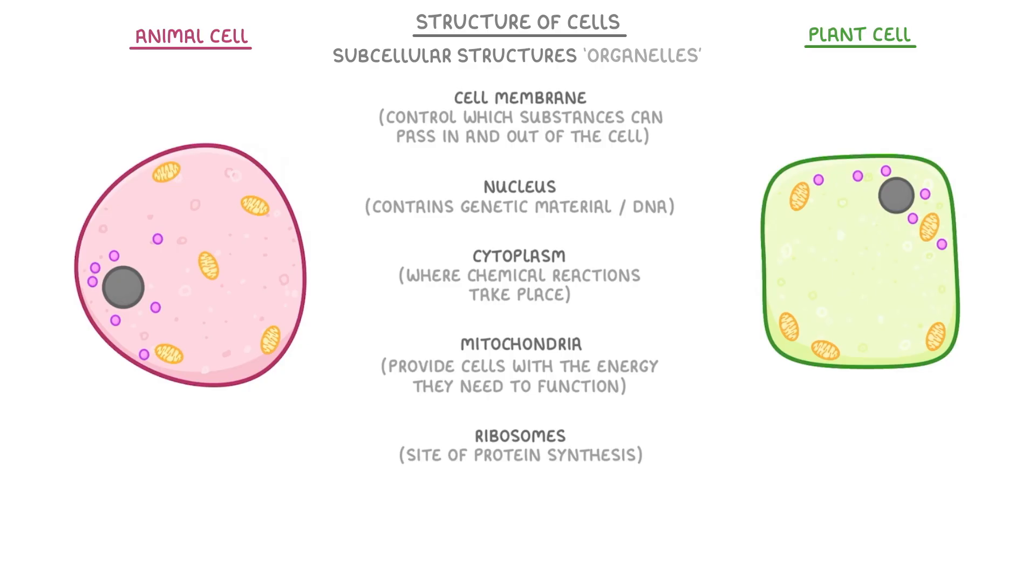But importantly, plant cells also have a few extra structures. For one, they have a rigid cell wall around the entire cell, made up of a material called cellulose. And because cellulose is really strong, the cell wall can provide support and structure to the cell. Which is really important, because if too much water entered the cell, it would otherwise burst.